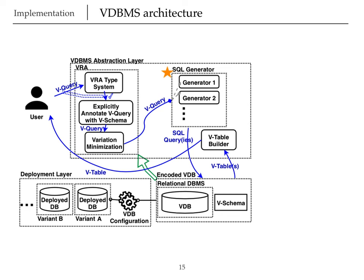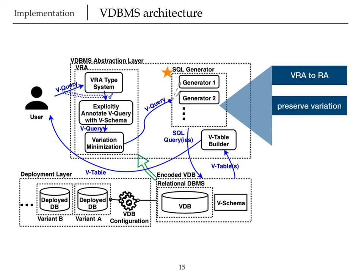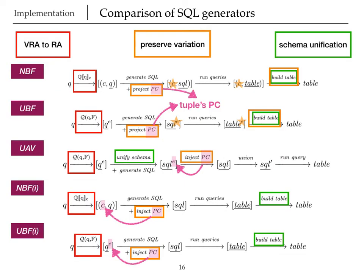These generators conduct three tasks, translating variational relational algebra to relational algebra, preserving variation and finally unifying the schema of either the query or the returned table. Then, the SQL queries are run and the result is gathered in a variational table and returned to the user. We can also configure the variational database for each of the variants and configurations that we have.